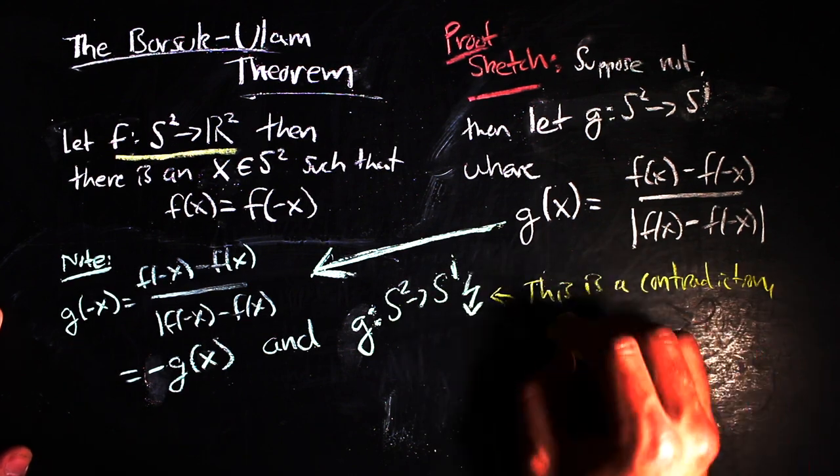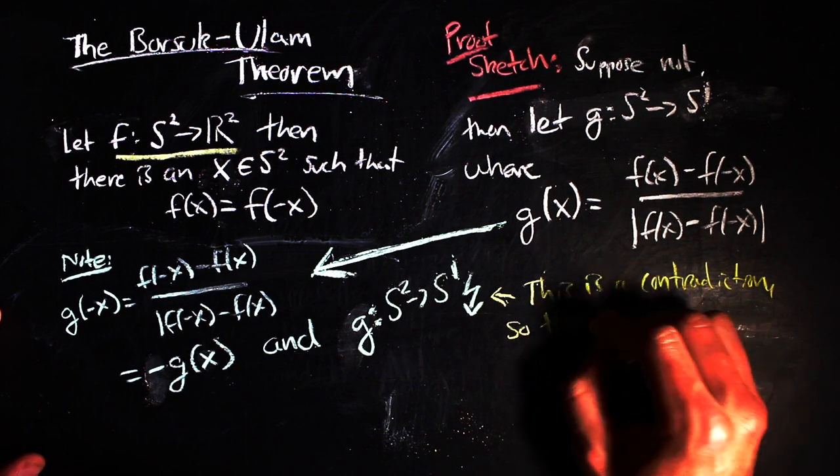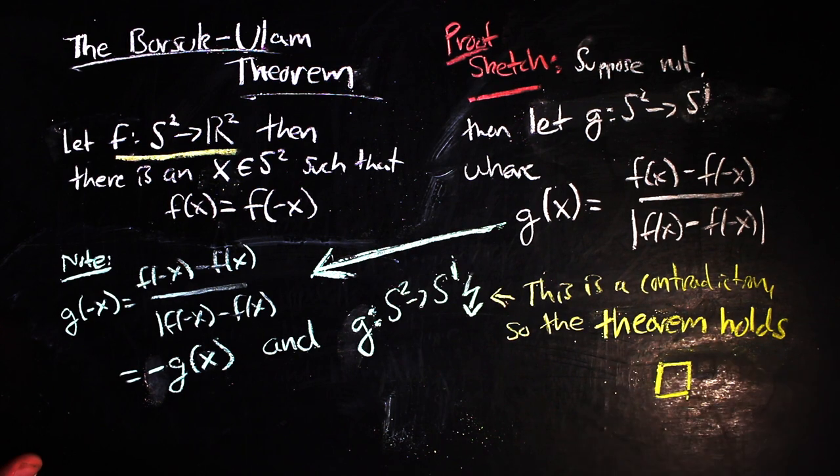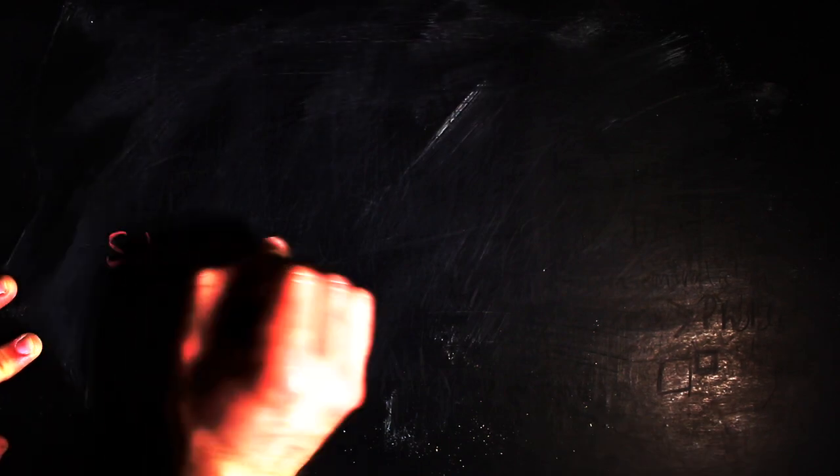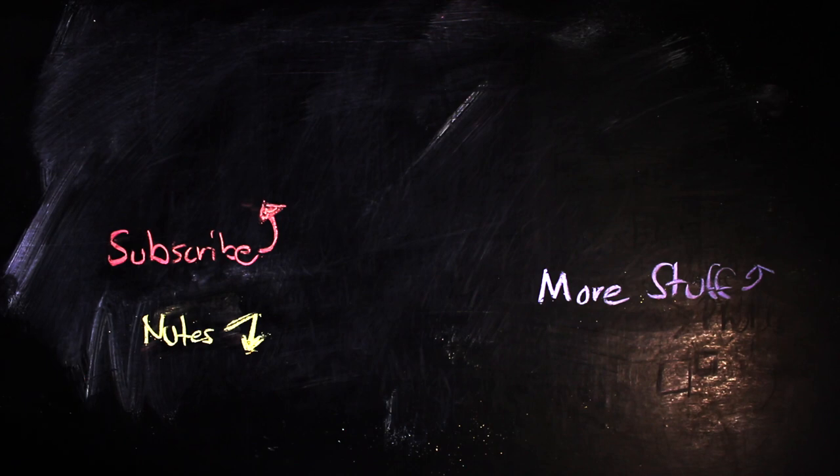So the Borsuk-Ulam theorem holds and we can say things like at any given point in time, there are two points on opposite sides of the globe that are experiencing the same exact temperature and humidity levels. Anyhow, I hope that gave you a bit of intuition behind the Borsuk-Ulam theorem for the sphere. If you want to see the math in all of its glory, check out the notes that are linked below.